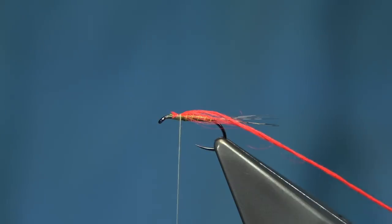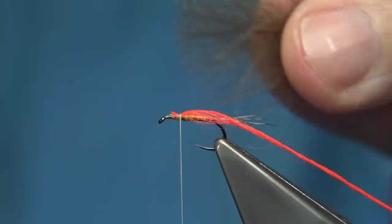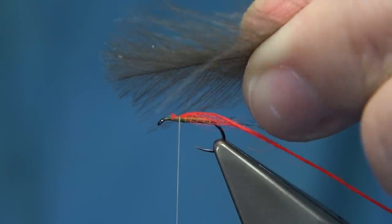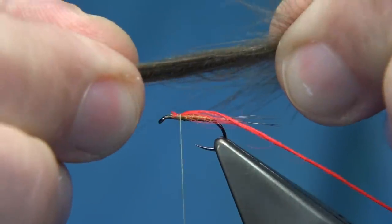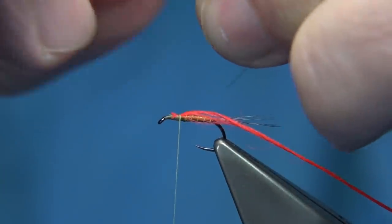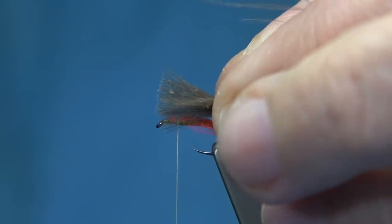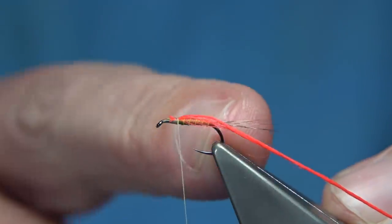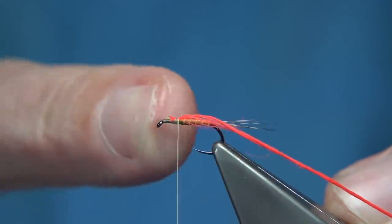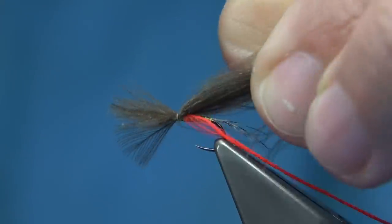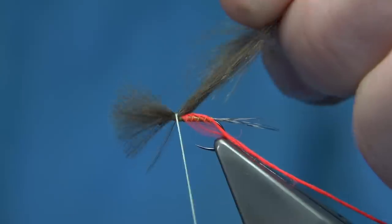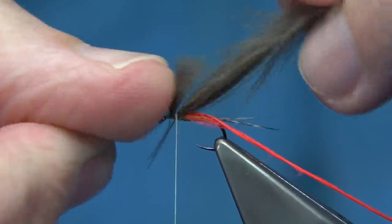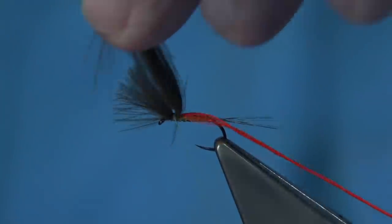Now for the wing, we need two natural CDC feathers. These are medium-sized. I'm laying one on top of the other, lining the tips up, and then I pull the fibers in like that—that's going to form the wing. I'm looking just within the hook, so round about from the barb to the eye. We tie that over the front with the curve of the feather up the way. Catch that, come around two or three turns just to hold it down. Check and tighten up with another couple.